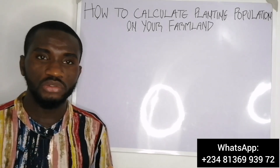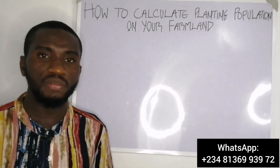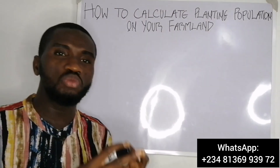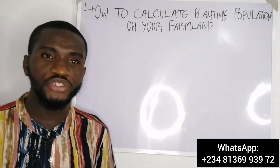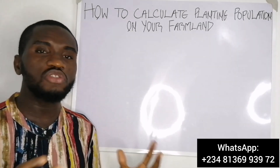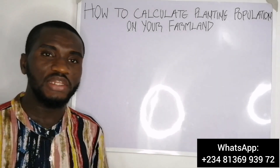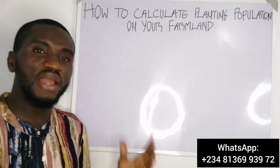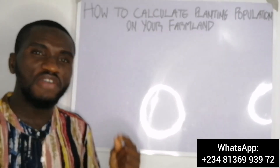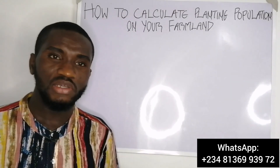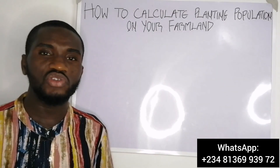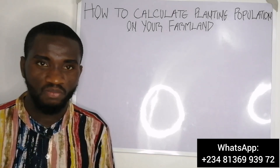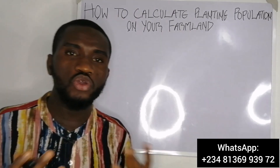Either way — planting too little or too much — causes low yield and low productivity on your farm. If you plant too much, the crops will be fighting for nutrients, water, and sunlight. If you plant too little, you will have very few plants standing on your farm, which will result in low yield at the end of the day.